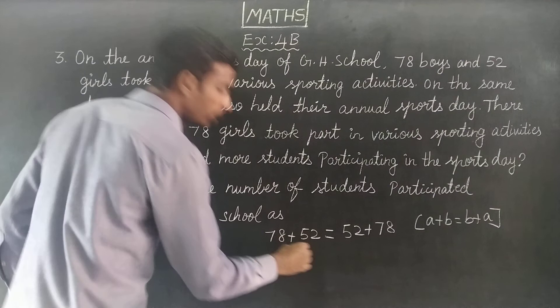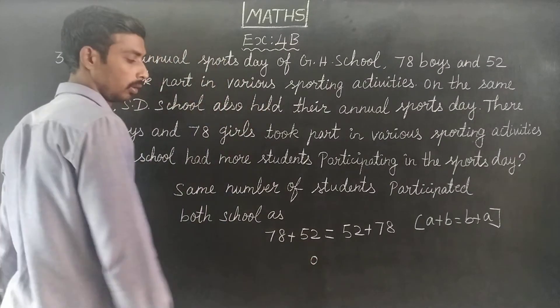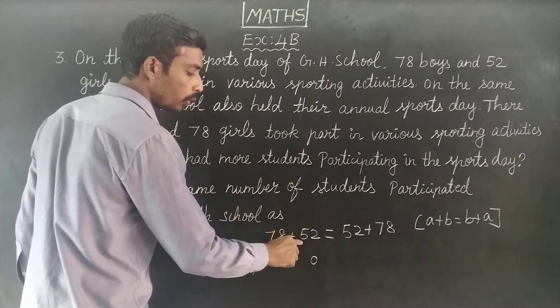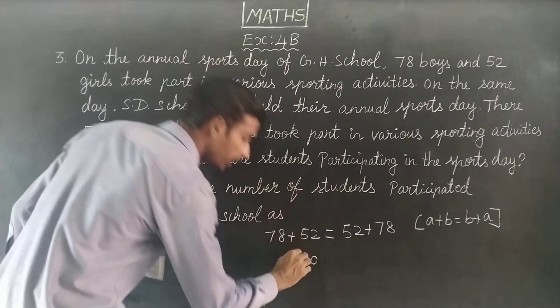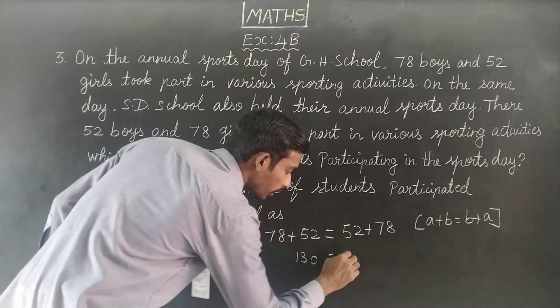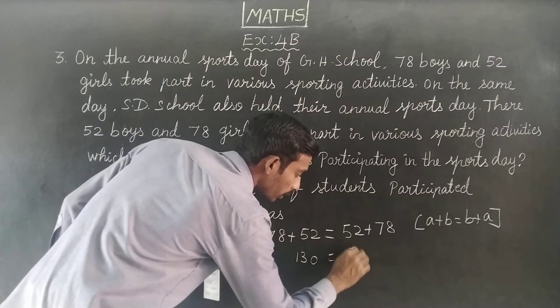We can add: 8 plus 2 is 10, carry 1. Then 7 plus 5 plus 1 is 13. So the total is 130 students in each school.